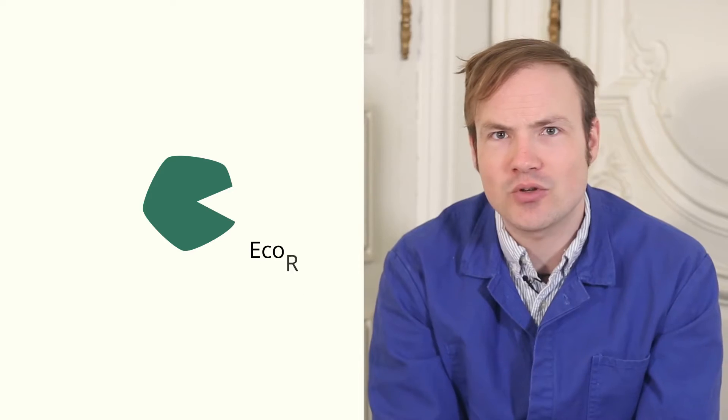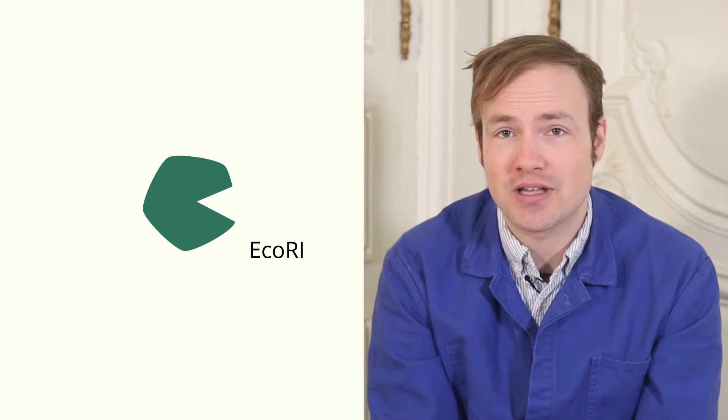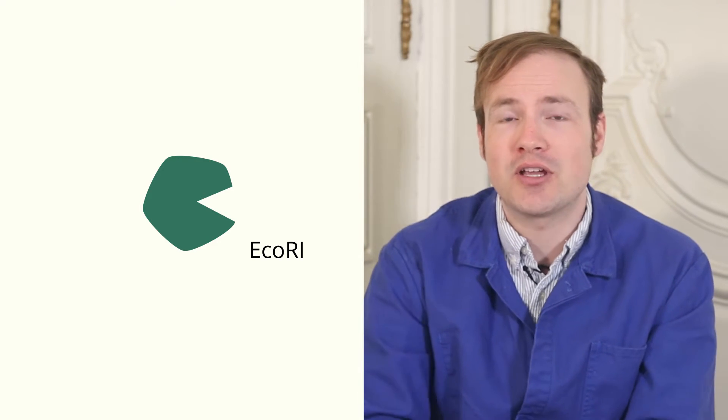Here I have a restriction enzyme called ECO-R1. The ECO is for E. coli, R refers to the specific strain where this enzyme was found, and 1 because it was the first enzyme found in that strain. We use Roman numerals because it's more cool and sciency looking.